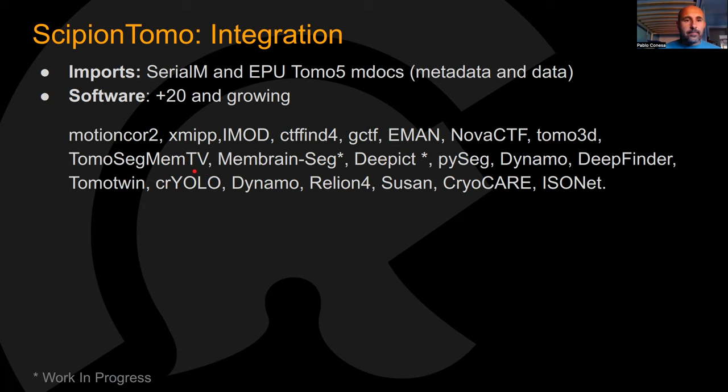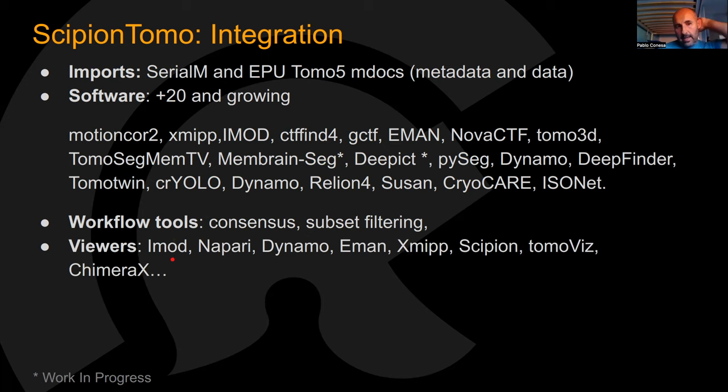For workflow tools, we have consensus methods and subset filtering — these come out of the box with Scipion. In terms of viewers, we integrate Dynamo, Napari, EMAN, XMIP, and Scipion Tomo viewers. Scipion is mainly for metadata visualization. TomoViz is a custom in-house viewer for tomography data. ChimeraX and many more are available.